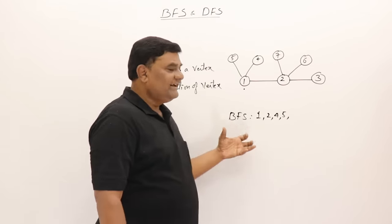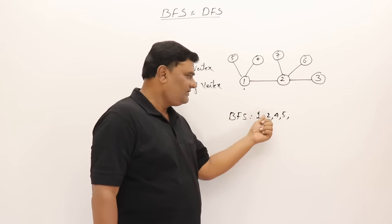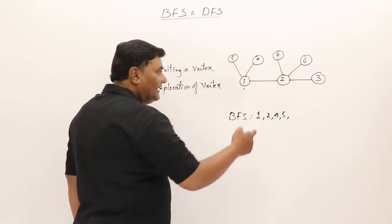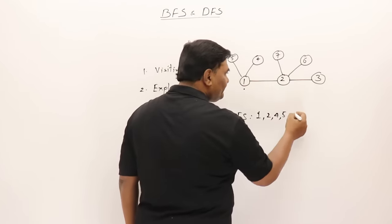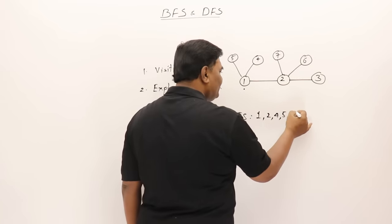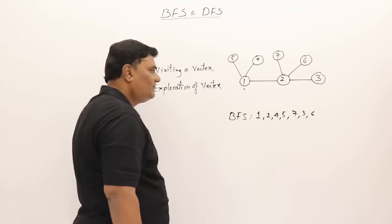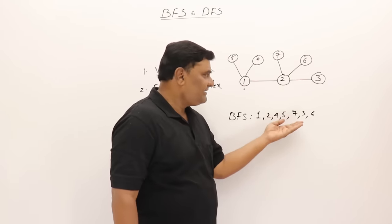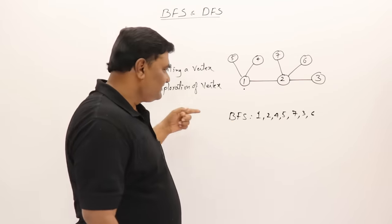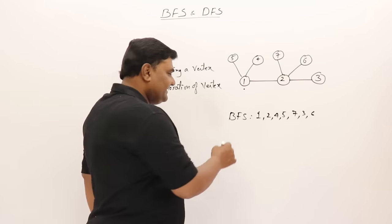Next I should select the next vertex for exploration. After visiting 1, I have visited 2, 4, and 5. I will explore 2 — who are adjacent to 2? They are 7, 6, and 3. You can take them in any order: 7, then 3, then 6. All the vertices are now visited and there is no vertex remaining for exploration. This is breadth first search.